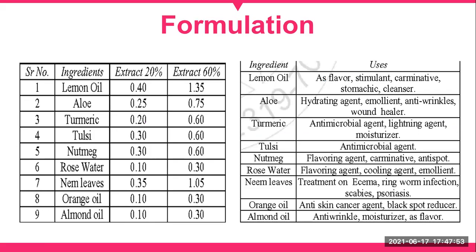We have one example of a herbal cream formulation. There are a number of ingredients with their quantities mentioned, such as lemon oil, aloe, turmeric, tulsi, nutmeg, rose water, neem leaves, orange oil, and almond oil. These are all natural ingredients. They have different pharmacological actions — for example, lemon oil can be used as a flavor stimulant or stomachic cleanser.